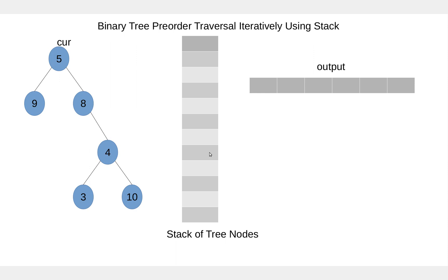The idea is: whenever we visit a node, we process the node and add it to the stack. If the node that we visit is null, then we pop a node from the stack and move to its right child. We continue this until the stack is not empty or the node that we visit is not equal to null. So let's visualize that.